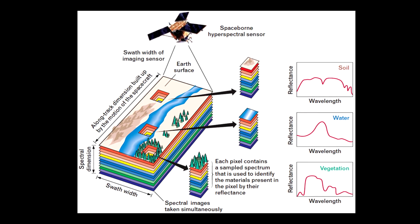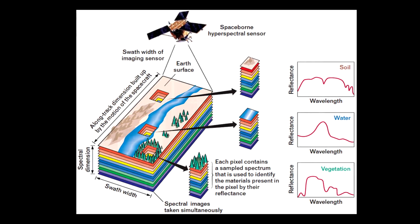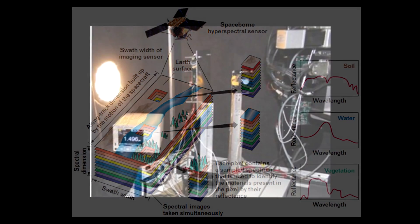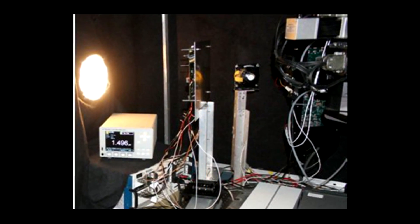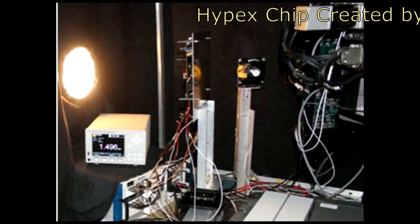HISPEX imaging is said to enable distinct identification of objects, materials, or processes on Earth by reading the spectrum for each pixel of a scene from space.